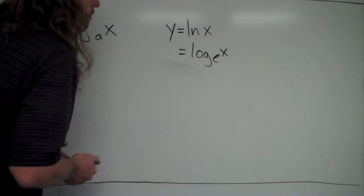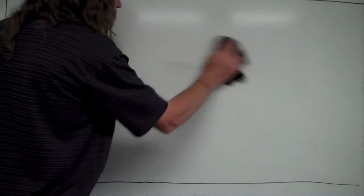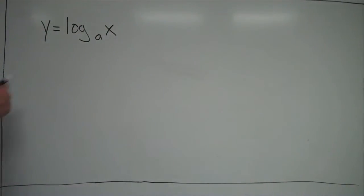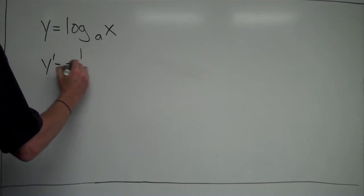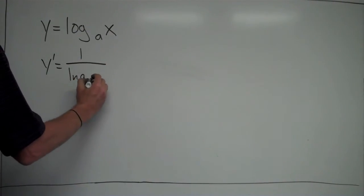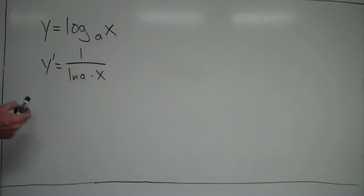We know that for the natural log, the derivative is just 1 over x. In the case that it is not base e, the derivative ends up being 1 over natural log of a times x. You still see the 1 over x there, but we also have the natural log of a. In the case that a equals e, ln of e is just 1, so it still works out and applies to the natural log of x.